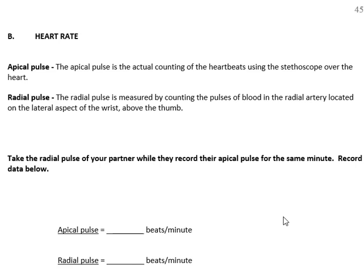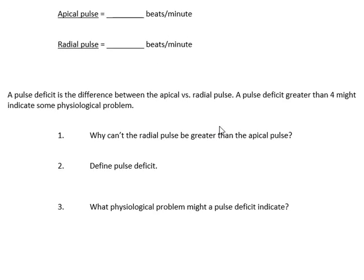For the apical and radial pulse lab section, you need two people measuring the same subject simultaneously — one listening to the apical pulse with a stethoscope, one feeling the radial pulse. A third person acts as timekeeper. Record both values — they should match. If they don't, figure out what cardiac condition would cause radial pulse to be less than apical. And think about why the radial pulse can never be greater than the apical pulse — understanding that means you understand pulse deficit.